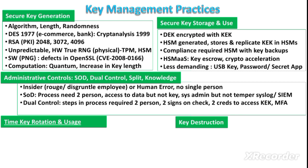In dual control, a certain step in a process requires action by two persons — similar to requiring two signatures on a check. For example, two credentials are required to access key encryption keys in an HSM: one person inputs a password and another provides biometric authentication or another multi-factor authentication device, so two persons must act together to handle a specific step in the process.